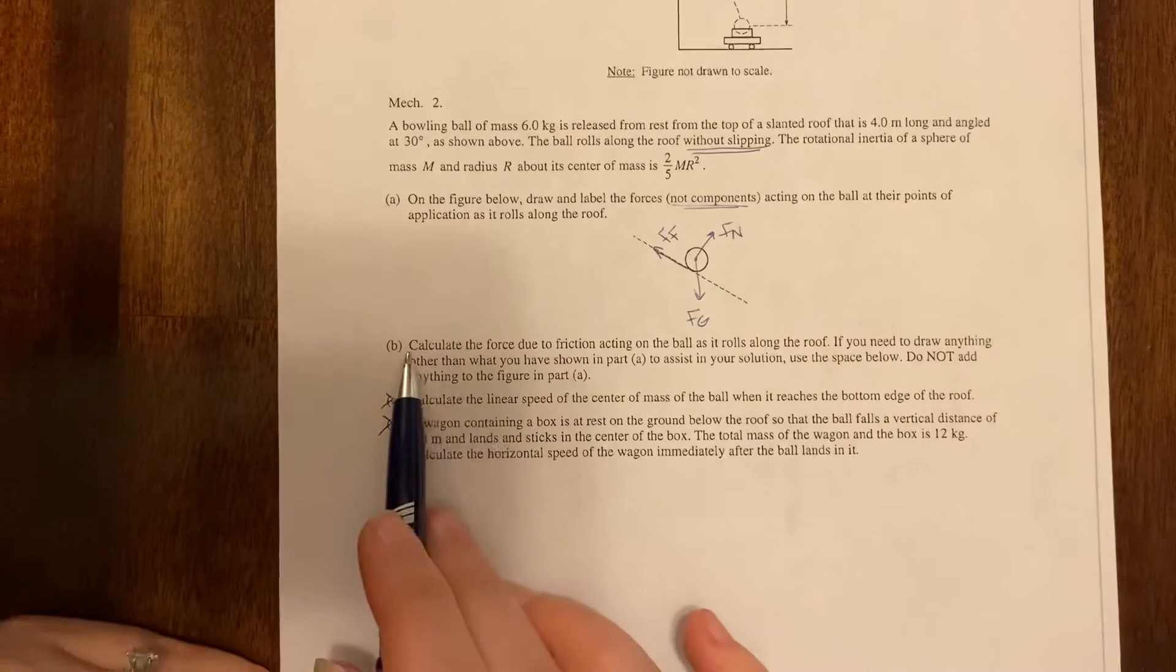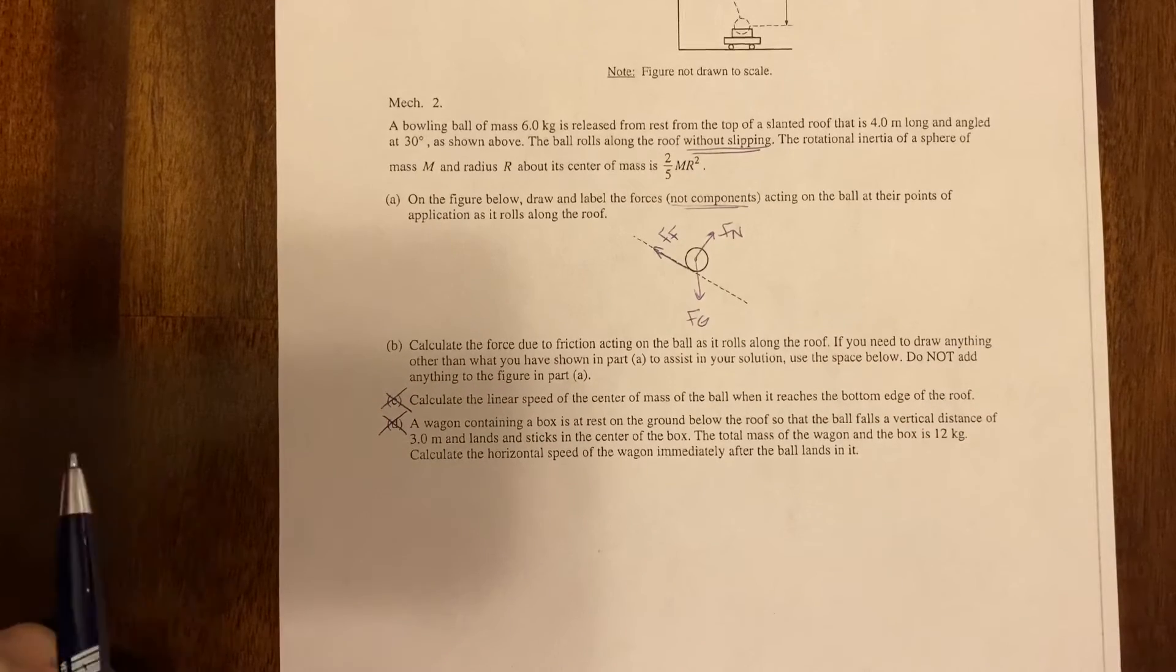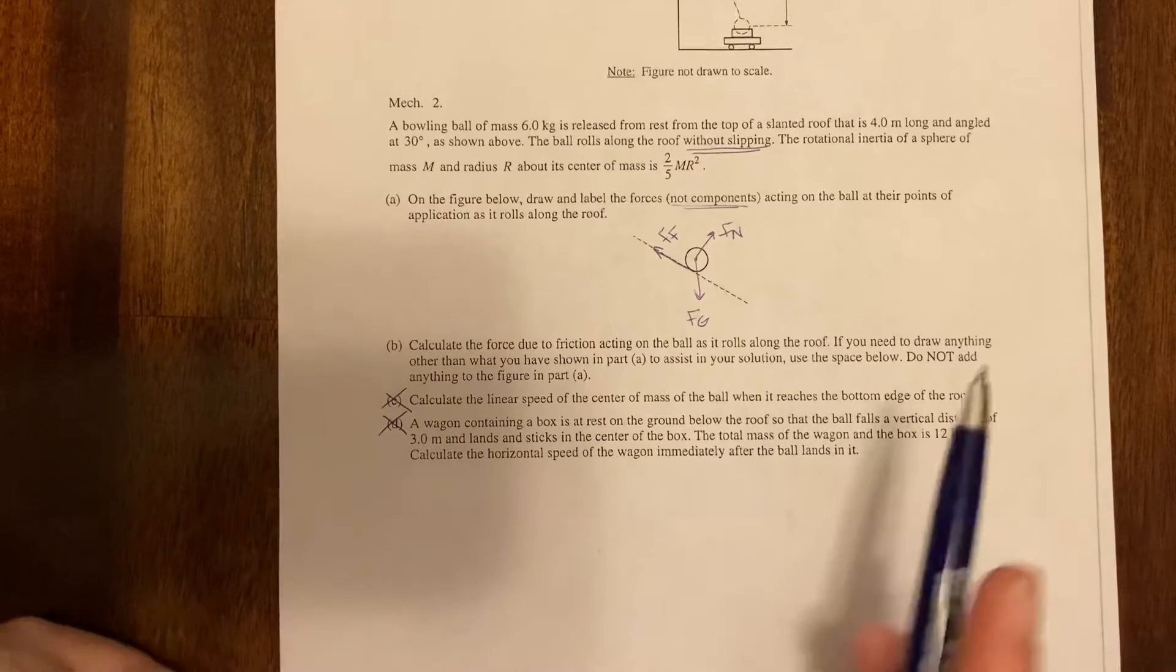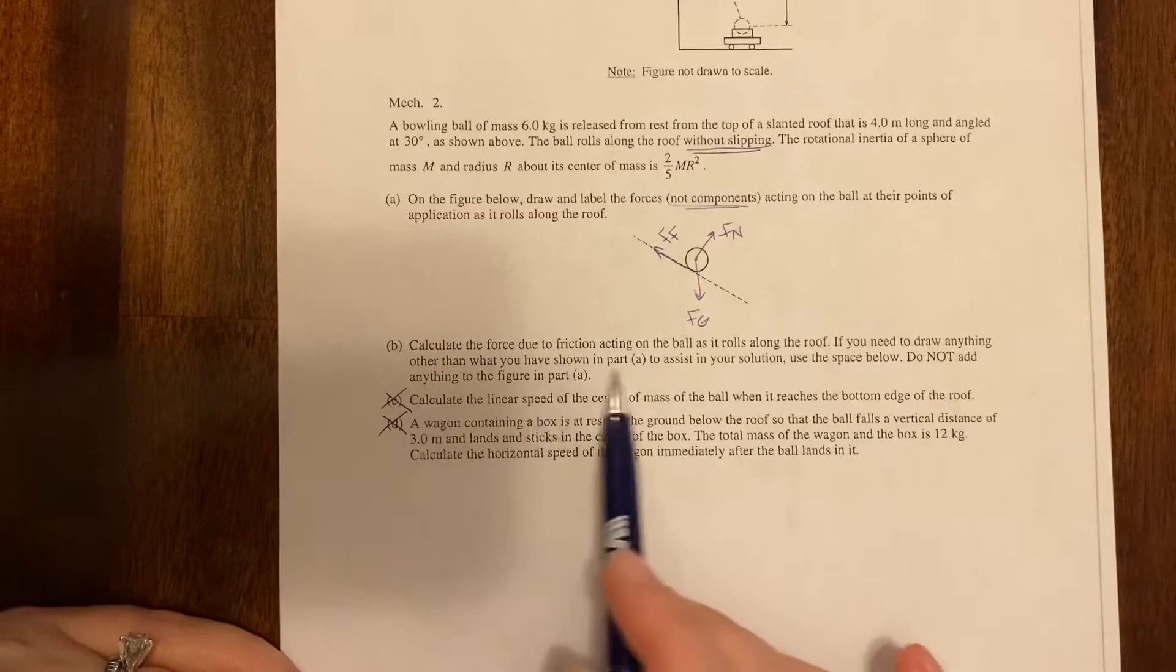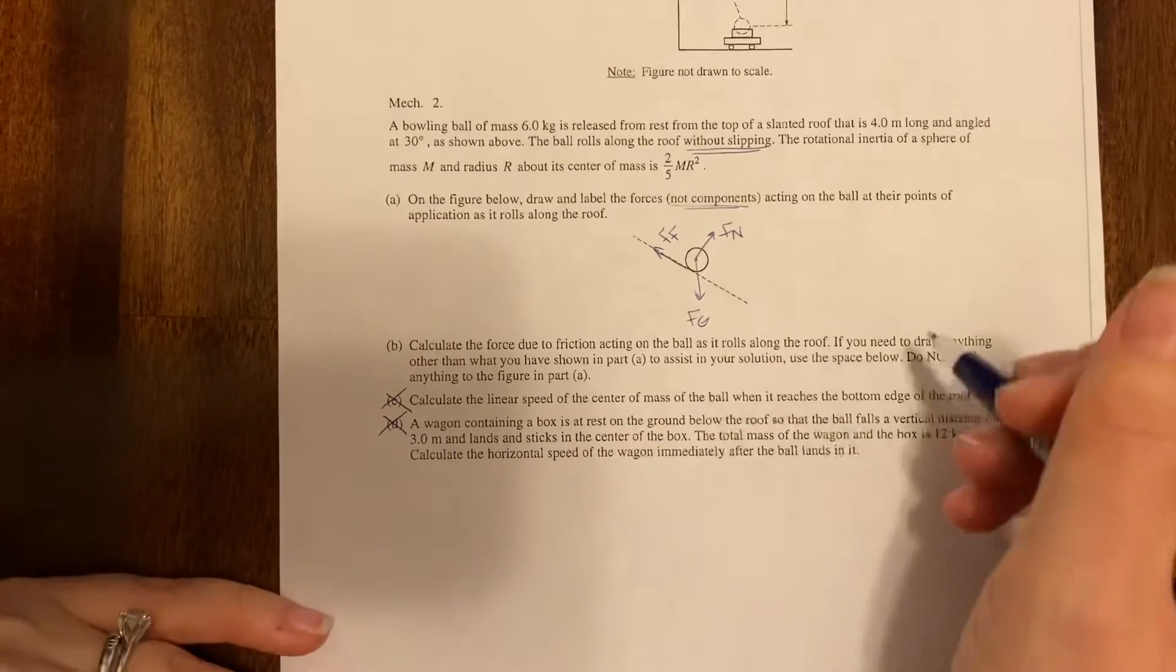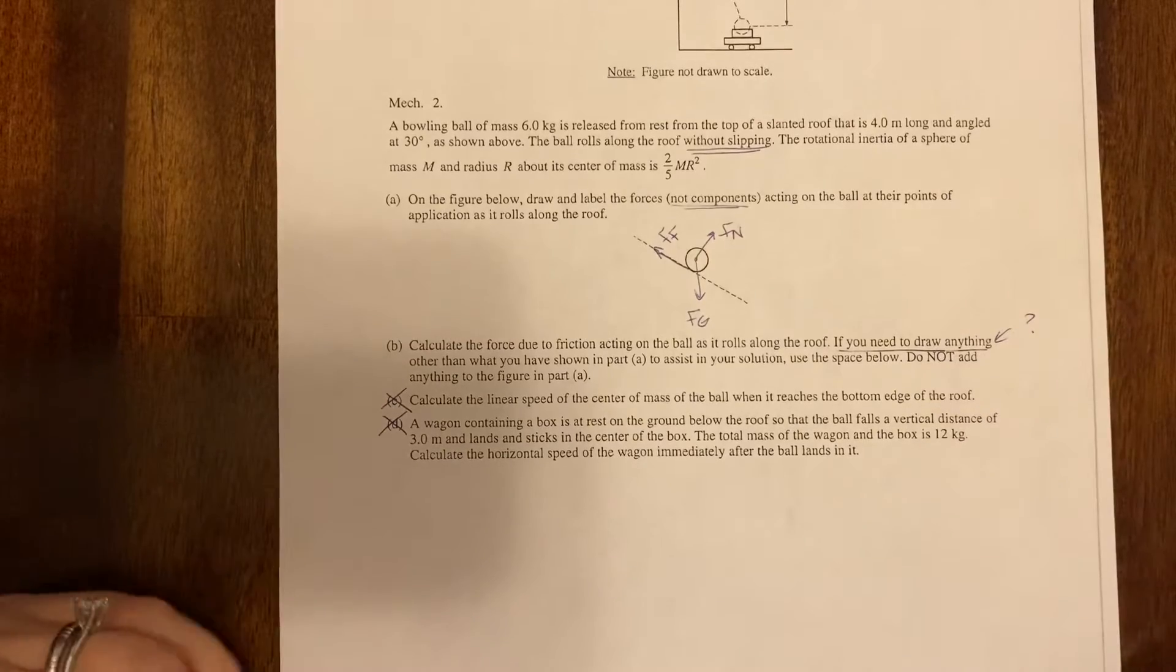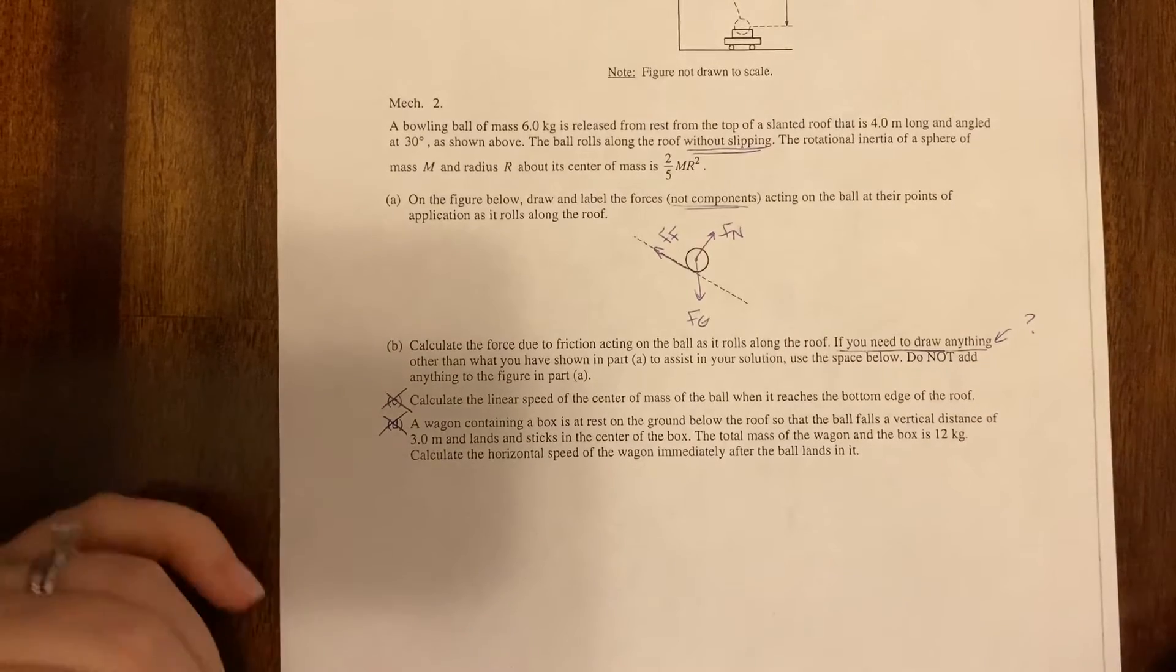Okay so this one is telling us to calculate the force due to friction acting on the ball as it rolls along the roof. If you need to draw anything else other than what you have shown use the space below, do not add it. Okay so you got to think like a test maker here. Why are they saying this? Well they're saying this because you actually have to draw something.